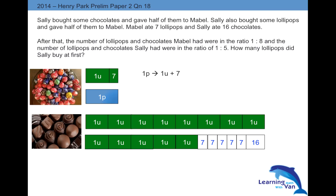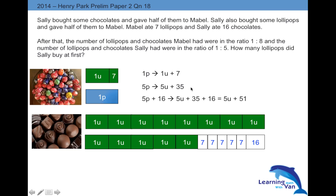If 1 part is equivalent to 1 unit plus 7, then 5 parts will be 5 units plus 35. Multiply both sides by 5: 5 parts equals 1u × 5 which is 5 units, and 7 × 5 which is 35. We are told the other expression is 5 parts plus 16, so adding it all up gives 5 units plus 51. Therefore, 8 units equals 5 units plus 51. The difference is 3 units equals 51, so 1 unit equals 17.